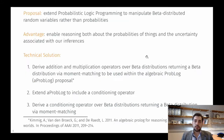Our proposal is to extend probabilistic logic programming to manipulate beta distributed random variables rather than probabilities. The main advantage is that we can enable reasoning about both the probabilities of things and the uncertainty associated with our inferences.